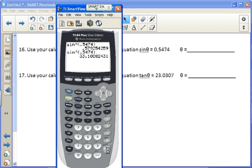So let's try that again now that we're in degree mode. So we get 33.189 degrees. Okay, 17, we need to do arc tangent of 23.0307. We get 87.514.